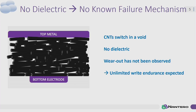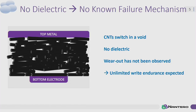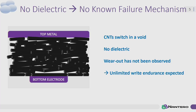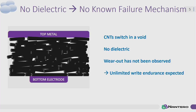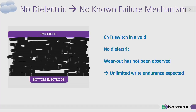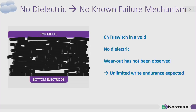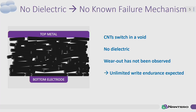We're not relying on a single carbon nanotube to switch. We have between hundreds and thousands of these in every cell, forming a stochastic network of resistive elements. An electrostatic force combines thousands of nanotubes to lower the resistance; breaking them apart increases the resistance of the cell. All of the action happens near the bottom of the cell.